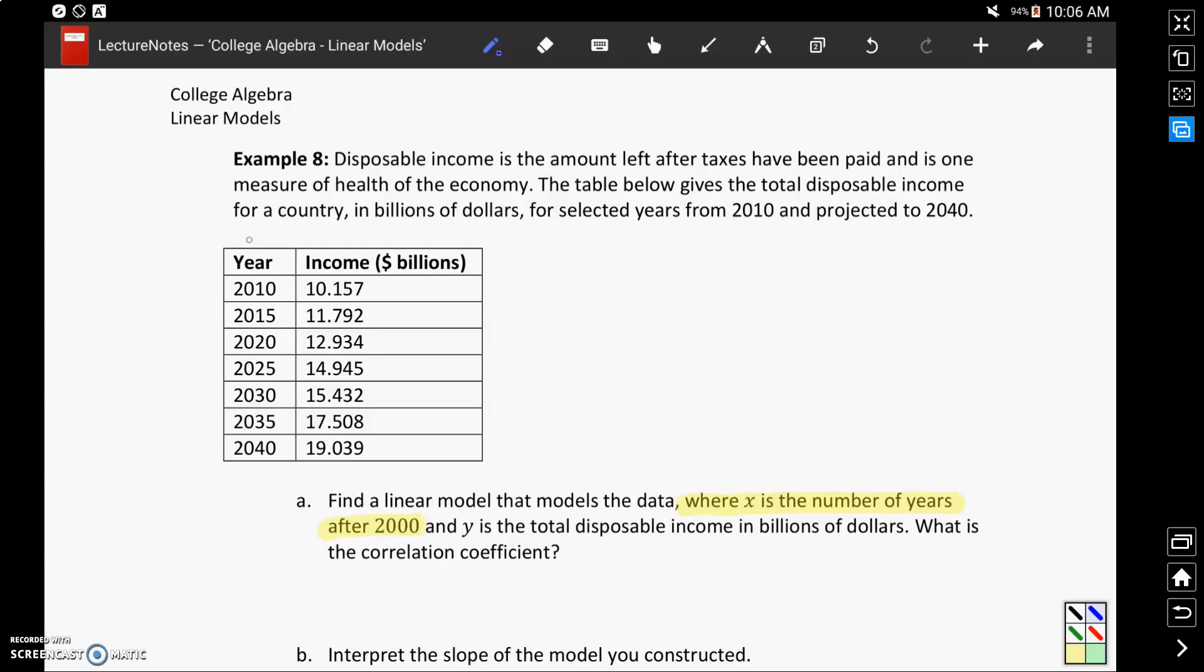So our column for year is going to make up our X variables, our column for income is going to make up our Y variables, but to adjust this to be number of years after 2000, we're going to shift each of these values. So 2010 would be 10 years after 2000, and then 15 years after, and so on. So we're going to make this adjustment to our data as we enter it into our data table.